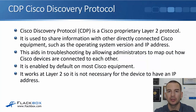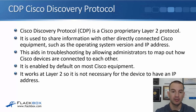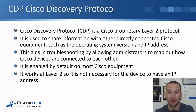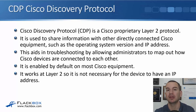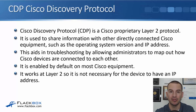In this lecture, you'll learn about Cisco Discovery Protocol, CDP, and the Link Layer Discovery Protocol, LLDP. They're both very similar protocols. CDP is a Cisco proprietary layer 2 protocol, and it's used to share information with other directly connected Cisco equipment, such as the operating system and the IP address. That information will be shared between connected devices, and it aids in troubleshooting by allowing administrators to map out how Cisco devices are connected to each other.